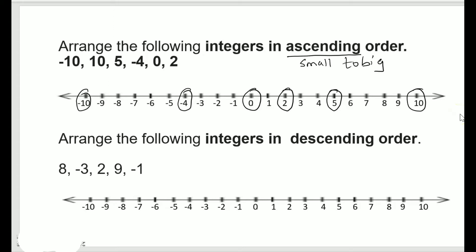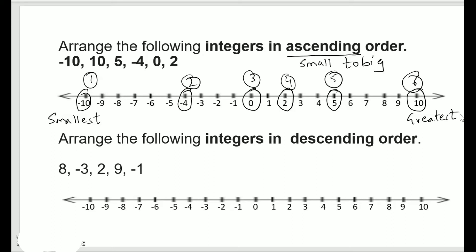As we move to the right of the number line the number increases, and as we move to the left the number decreases. So arranging from small to big, the smallest number is on the left and the greatest is on the right. Reading left to right: minus 10, minus 4, 0, 2, 5, 10. Using symbols: minus 10 < minus 4 < 0 < 2 < 5 < 10.